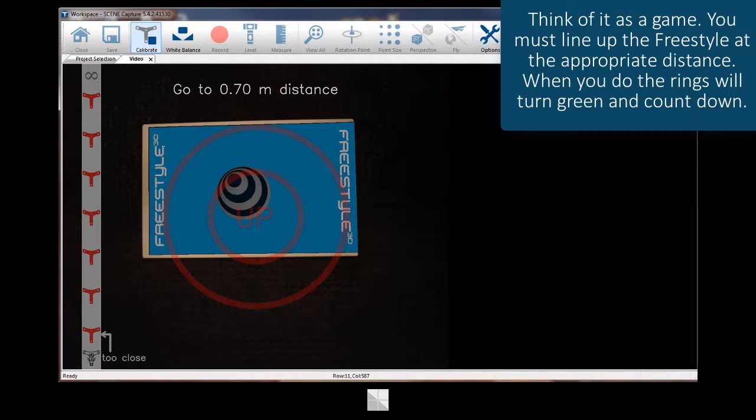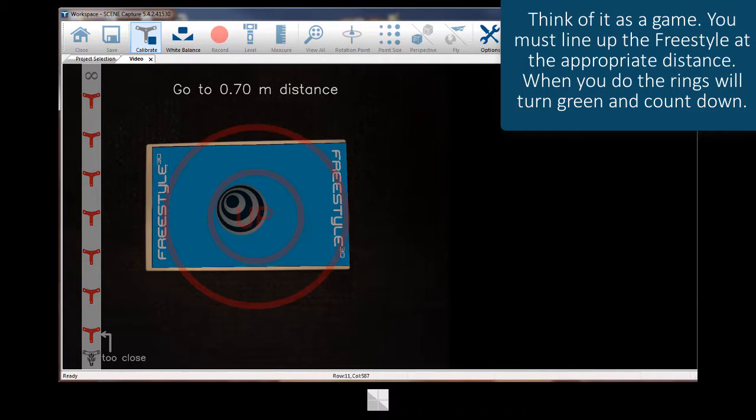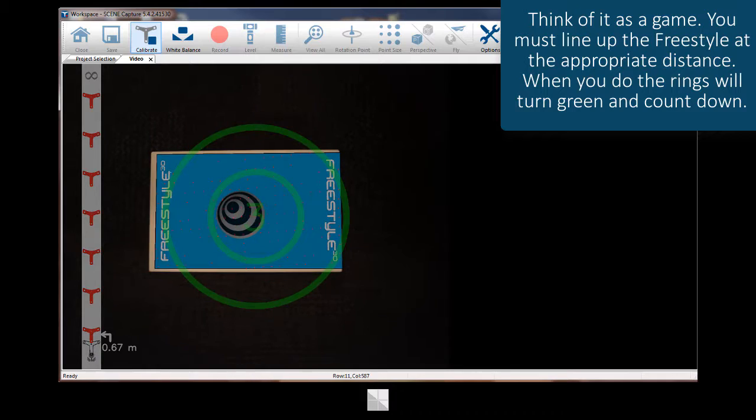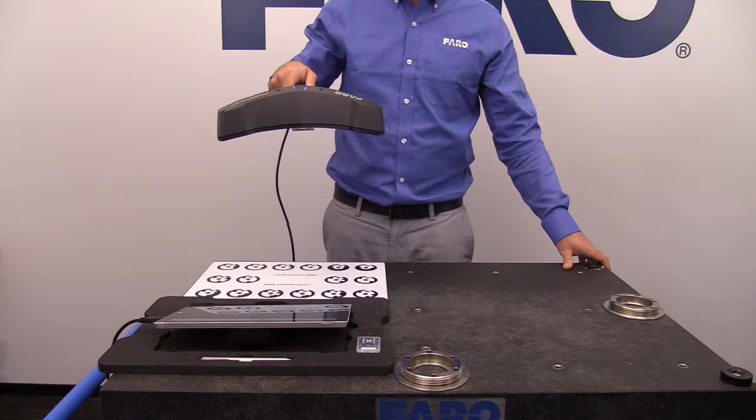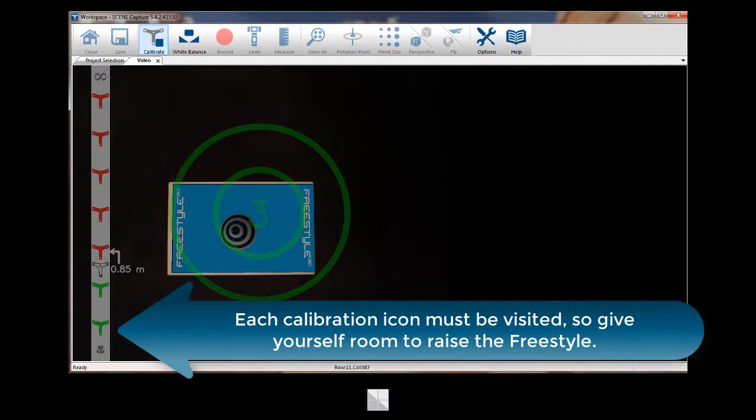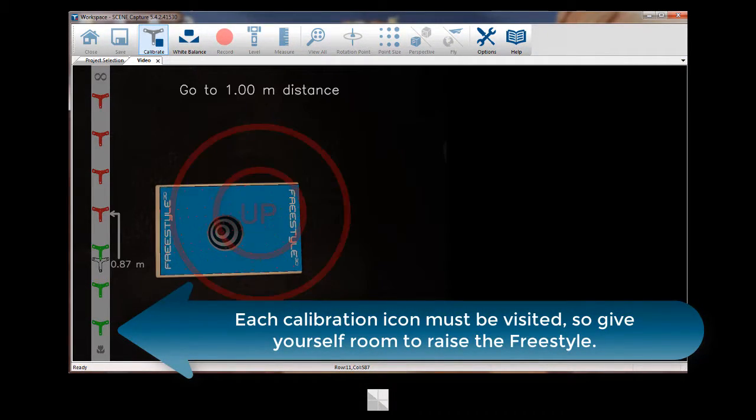Think of it as a game. You must line up the Freestyle at the appropriate distance. When you do, the rings will turn green and count down. Each calibration icon must be visited, so give yourself room to raise the Freestyle.